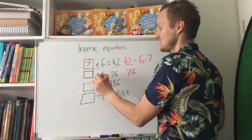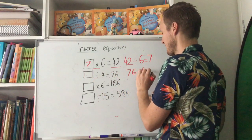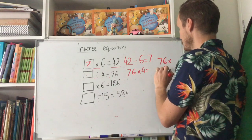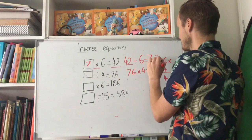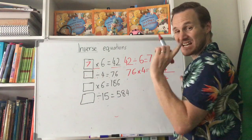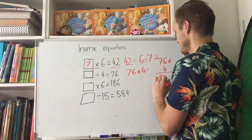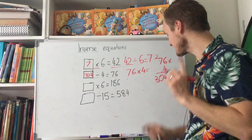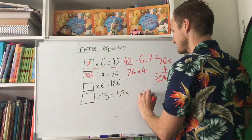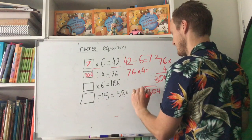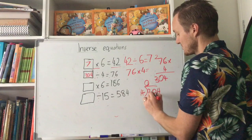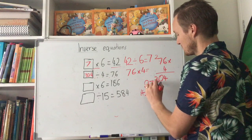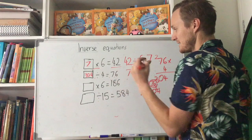Next one: something divided by 4 equals 76. Start with the answer 76, change division to multiplication: 76 times 4. That's a bit more difficult — let's work it out. 4 times 6 is 24, carry the 2; 4 times 7 is 28 plus 2 is 30. So the answer is 304. Now let's check: 304 divided by 4 — 4 goes into 30 seven times with 2 left over, 4 goes into 24 six times — gives us 76. Correct!